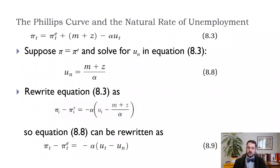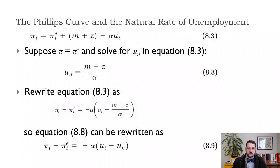Starting with equation 8.3: inflation equals expected inflation plus m plus z minus alpha times u_t. If inflation equals expected inflation, the left-hand side becomes zero after moving expected inflation over, and we can solve for the unemployment rate. Moving alpha times u_t to the left and dividing by alpha, we get the natural rate of unemployment equals (m + z) / alpha.